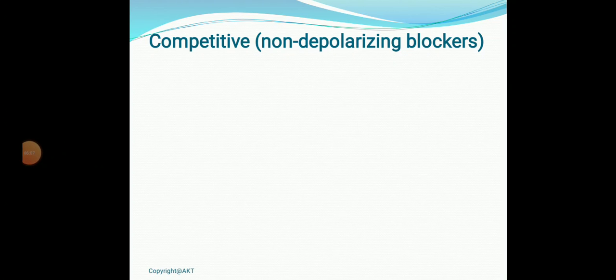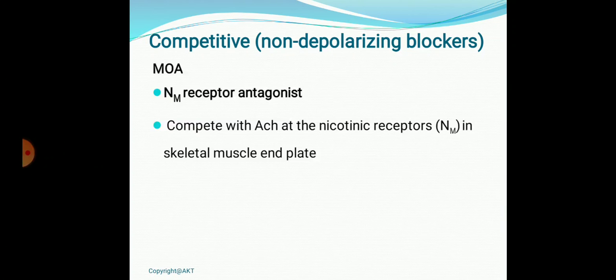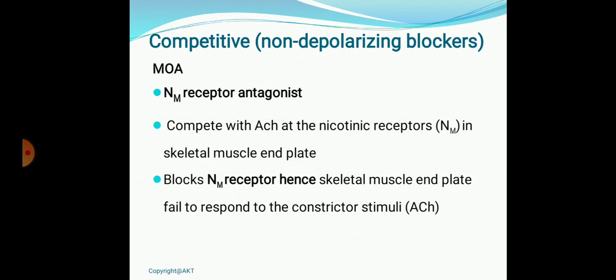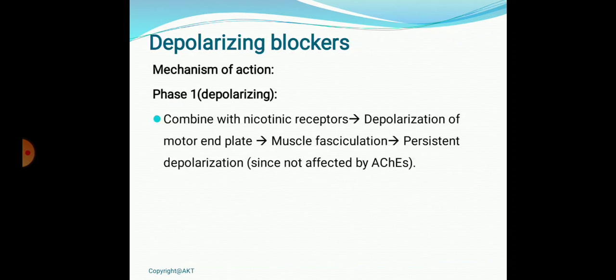Mechanism of action of competitive or non-depolarizing blockers: they are pure NM receptor antagonists. They compete with acetylcholine for NM receptors at the skeletal muscle end plate and block the receptor, leading to lack of response to acetylcholine and skeletal muscle paralysis. Depolarizing blockers act in two phases: phase one — they bind to the NM receptor and depolarize the motor end plate, initially producing disorganized skeletal muscle contraction resulting in muscle fasciculation.